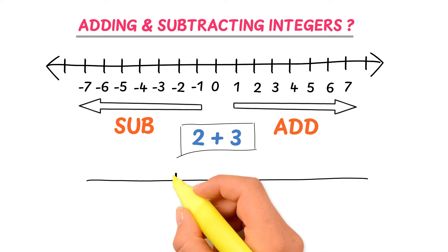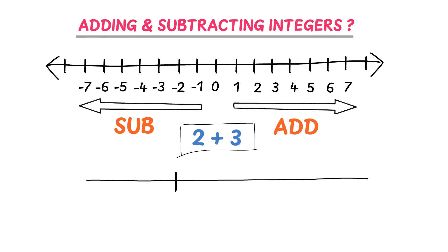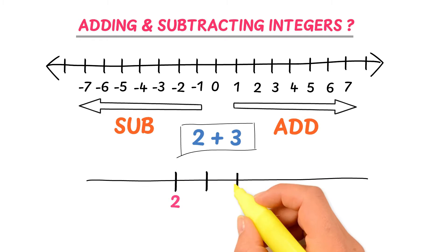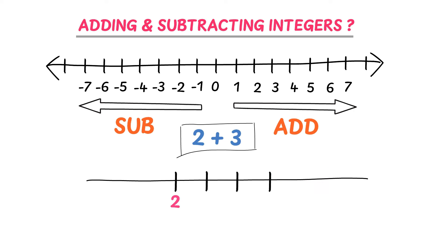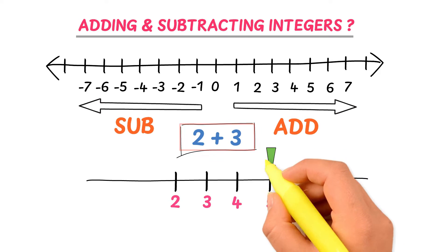For example, consider 2 plus 3. Draw a number line and write here the first integer which is 2. The second integer is positive 3, so we have to travel 3 spaces to the right: 1, 2, and 3. This lands on 3, 4, and 5. Therefore, 2 plus 3 is equal to 5.